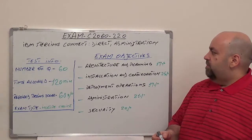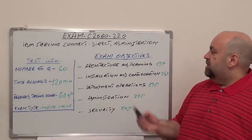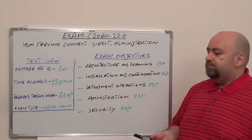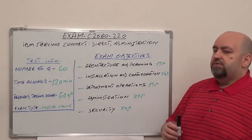On this exam, the objectives are the following. First, Architecture and Planning, 70% of total questions. Second, Installation and Configuration, 25% of total questions.